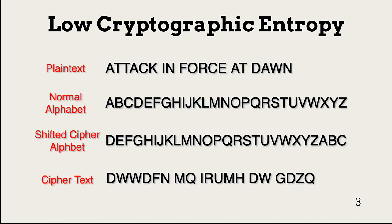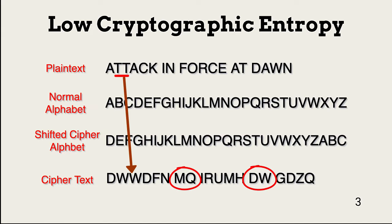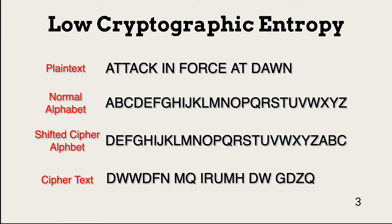Each language has its own patterns of usage. For example, our plain text contains a common letter, t, that is also commonly doubled. Further, the spaces between words allow a cryptanalyst to identify two-letter words. Common two-letter words in English are 'to' and 'at'. Based on these known language patterns, it's easy to identify w in the ciphertext as likely being t. Once this is known, the shifted alphabet is easy to identify. This ciphertext has very low entropy.